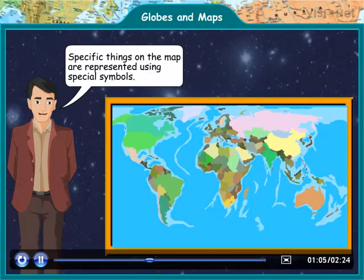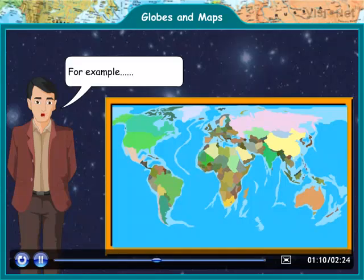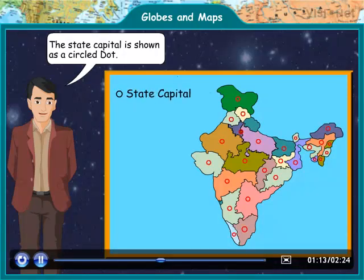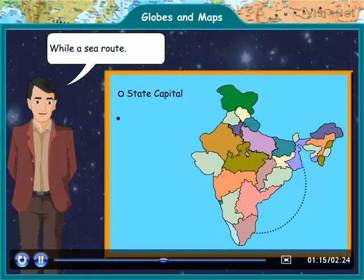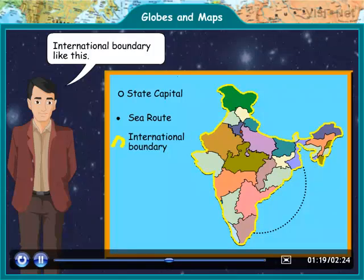Specific things on the map are represented using special symbols. For example, the state capital is shown as a circled dot, while a sea route or international boundary is shown like this.